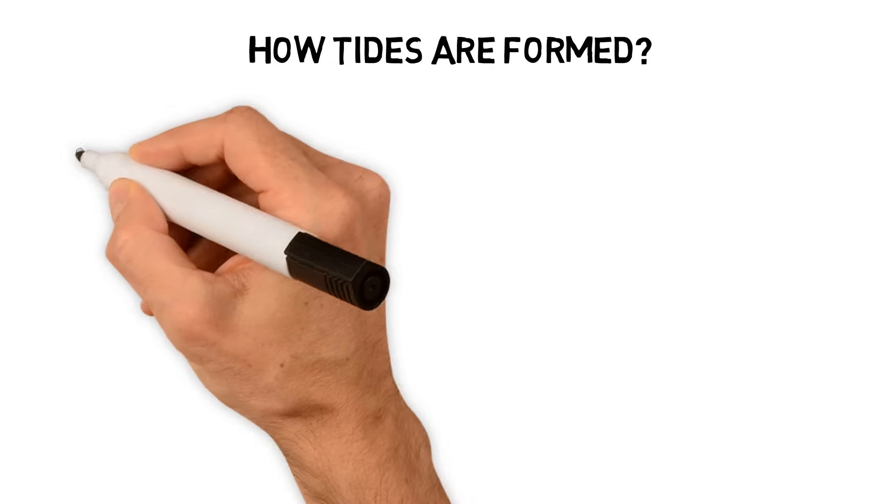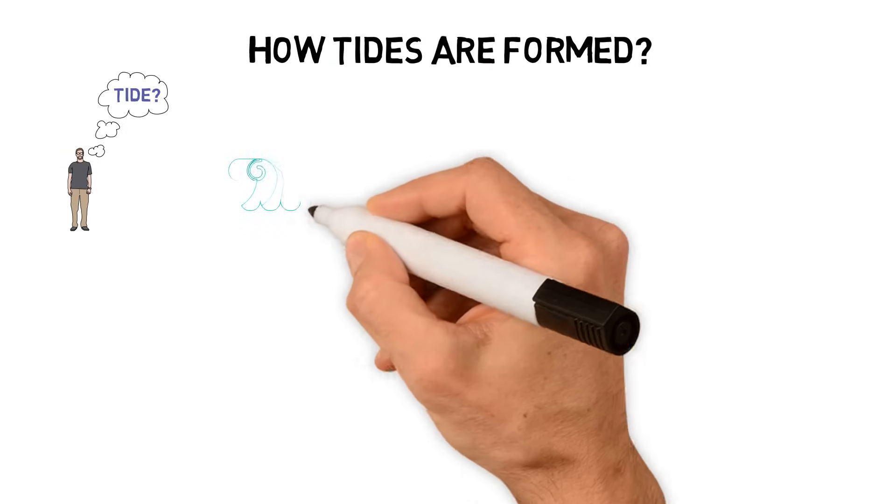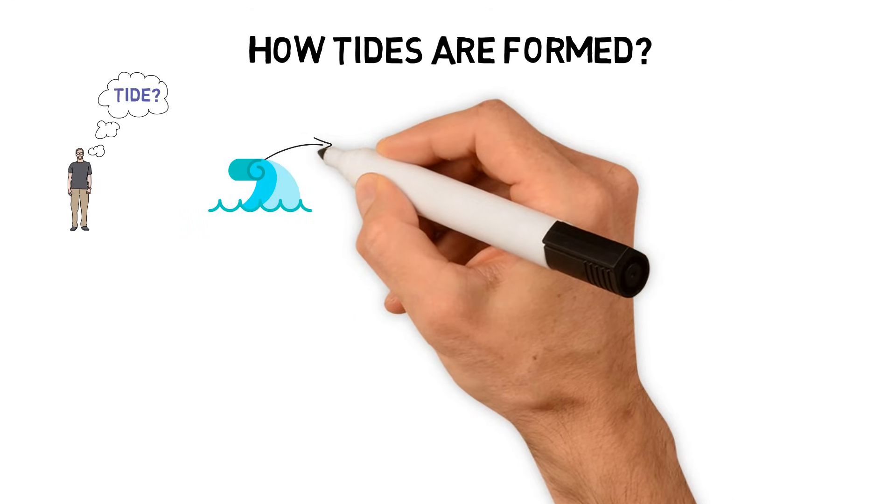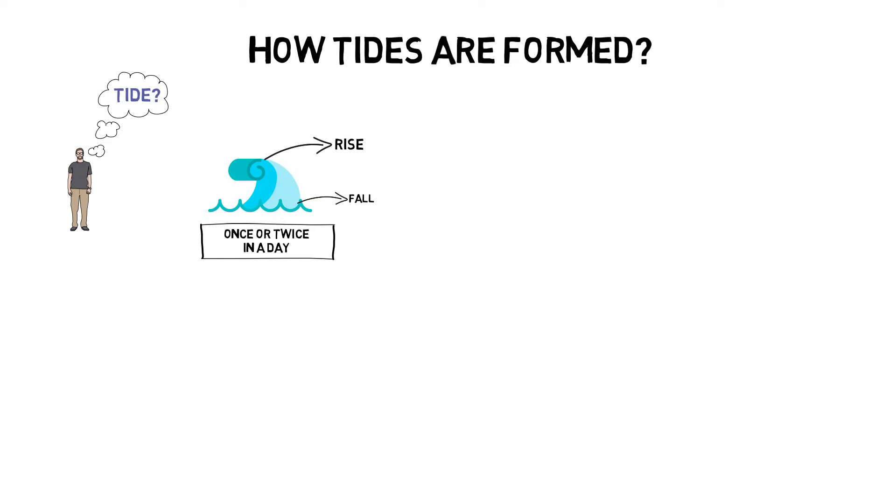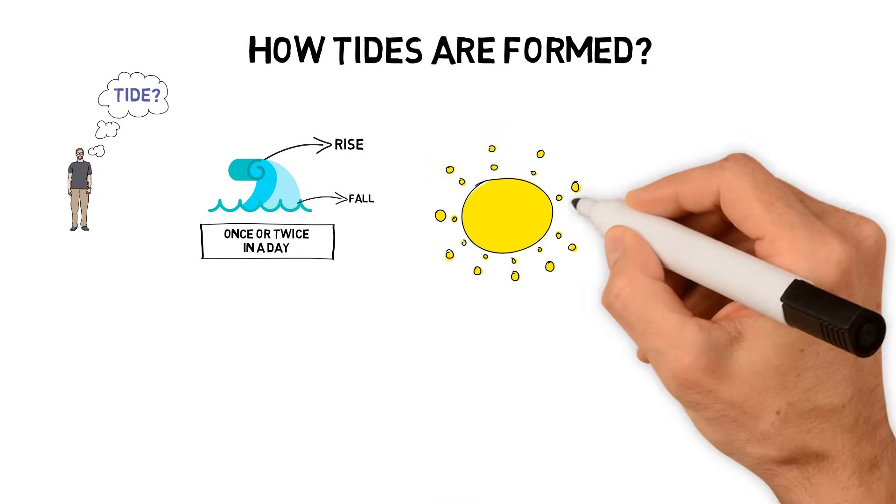Let's go to the next topic, tides. So what is a tide? It is basically a rise and fall of the sea level. It occurs once or twice in a day, and the reason behind that is due to the attraction of the sun and the moon.